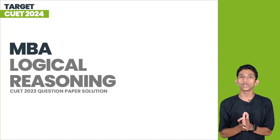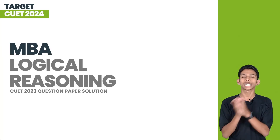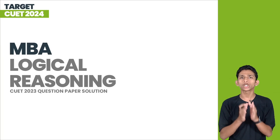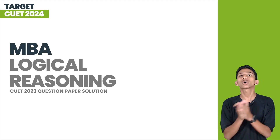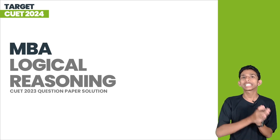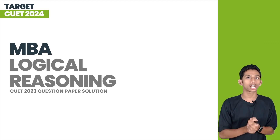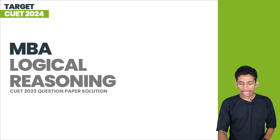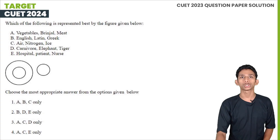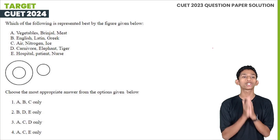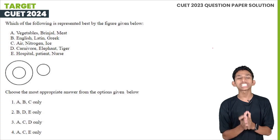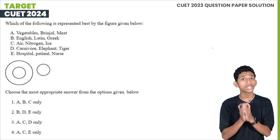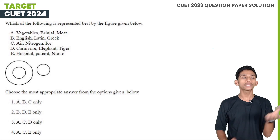Hi y'all, in this new session we are going to discuss CUET-PG. We are going to discuss MBAs and logical decision-making related to MBAs. In this session, the first question is: which of the following is best represented by the figure given below?